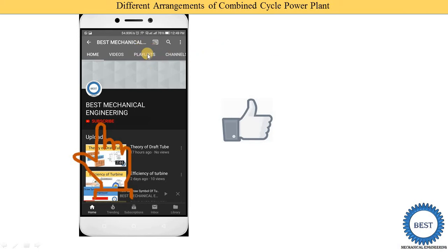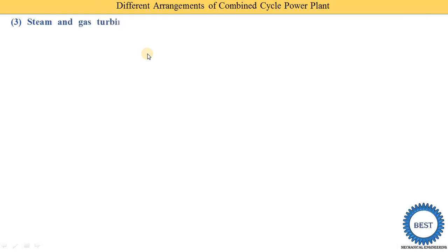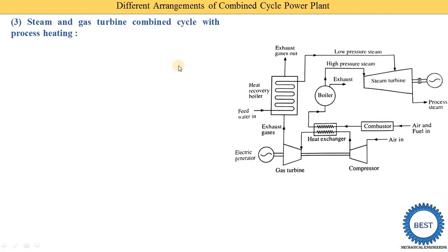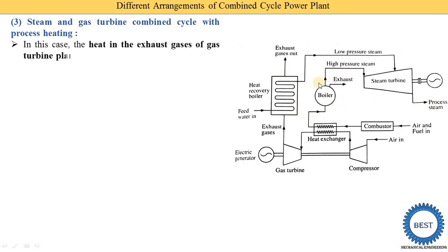The third arrangement is the steam and gas turbine combined cycle with process heating. Process heating means the steam coming out from the steam turbine is used in different industries for various heating purposes. As shown in the diagram, the steam coming out from the steam turbine is supplied as process steam. No condenser is used; the steam from the steam turbine is directly used for process heating. Additional boilers are also used in this arrangement.